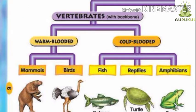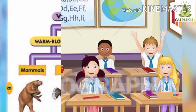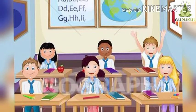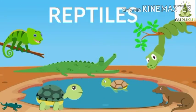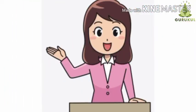Vertebrate animals are divided into warm-blooded and cold-blooded animals. Fish, reptiles, and amphibians come under the group of cold-blooded animals. So kids, today we will learn about reptiles.